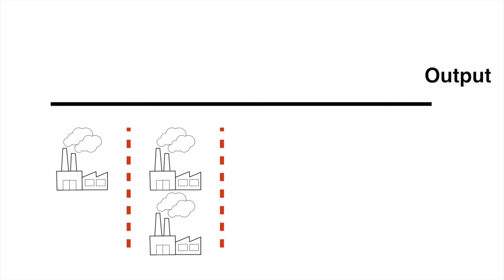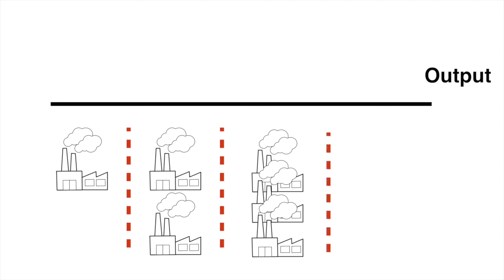Remember, the short run holds capital constant. As the firm expands, each of these sections divided by the dotted red lines represents a different short run period. Let's see how this looks when we draw it out.